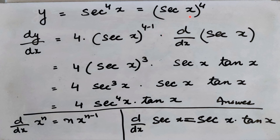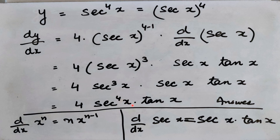The bracket gets the derivative again, so d/dx of sec(x). You get 4·sec³(x), because 4 minus 1 gives 3, multiplied by the derivative of sec(x). Using the formula d/dx of sec(x) = sec(x)·tan(x), you write sec(x)·tan(x). So you get 4·sec³(x)·sec(x)·tan(x). Now sec³(x) and sec¹(x) have the same base, so the powers are added: the final answer is 4·sec⁴(x)·tan(x).